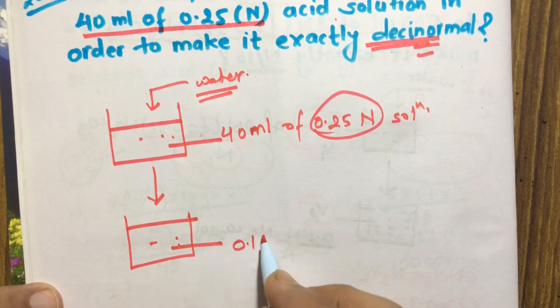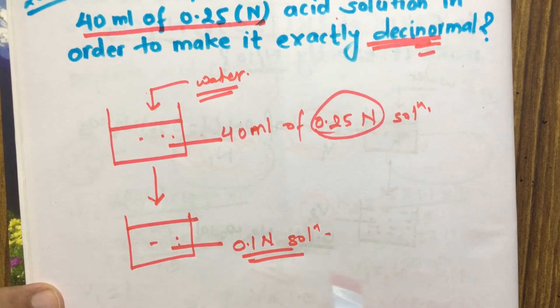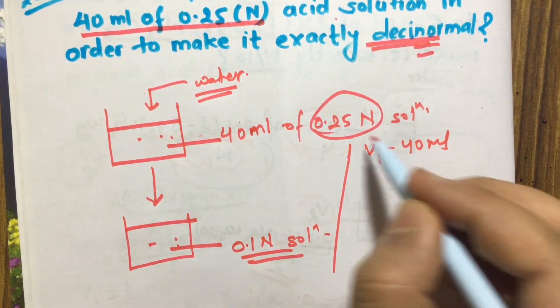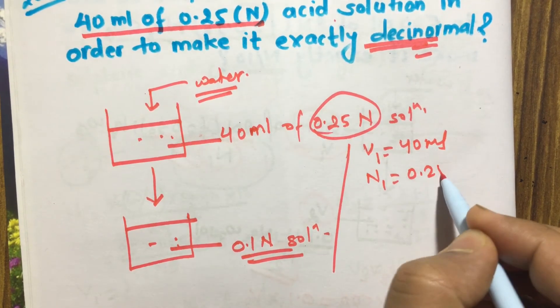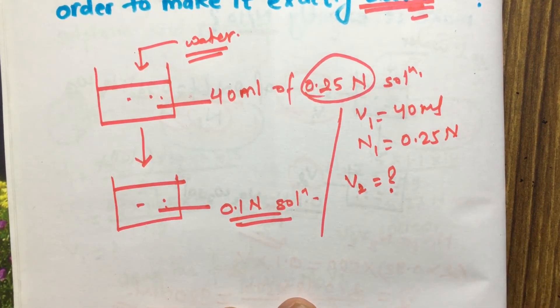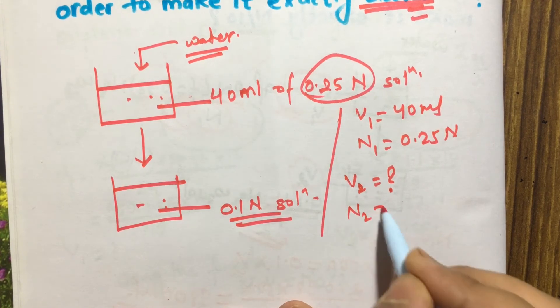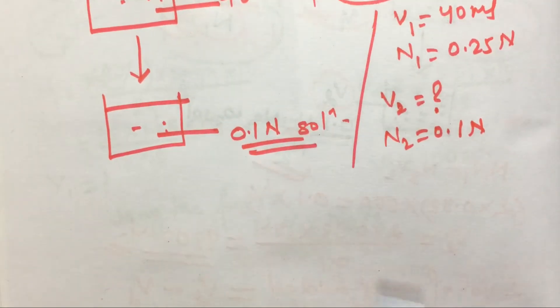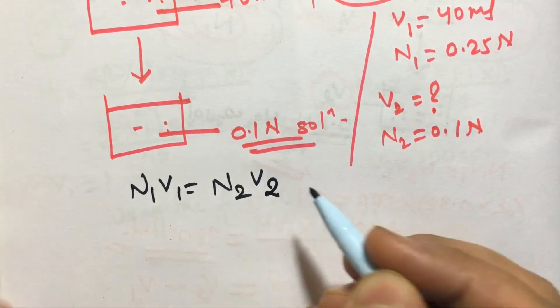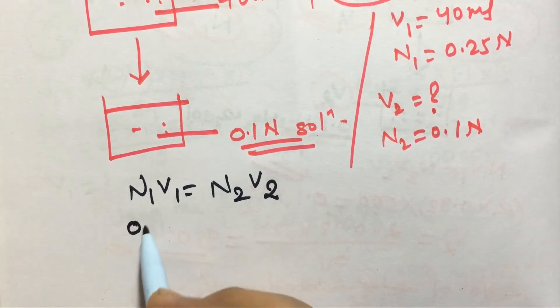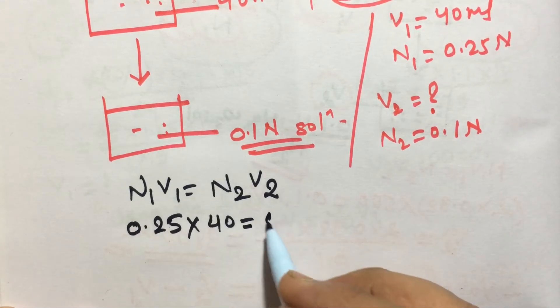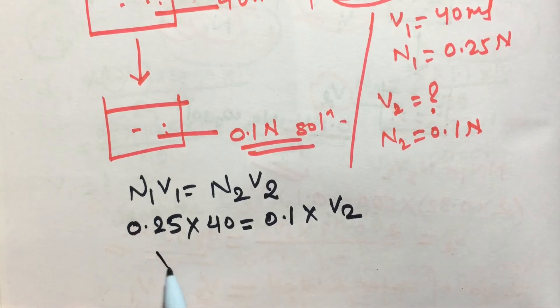Initially here V₁ is 40 ml, N₁ is 0.25N, and finally V₂ that we can find out, N₂ is 0.1N. Using the formula N₁V₁ equals N₂V₂, put the value: 0.25 × 40 equals N₂ is 0.1 and V₂, so we can calculate the value of V₂.